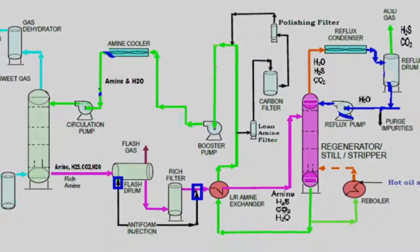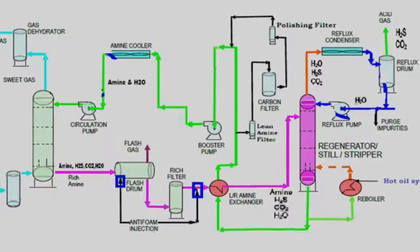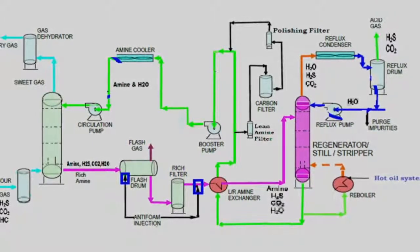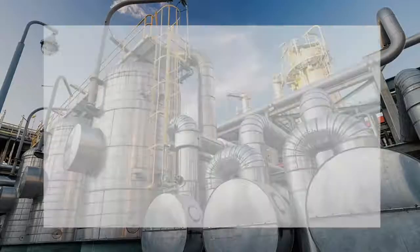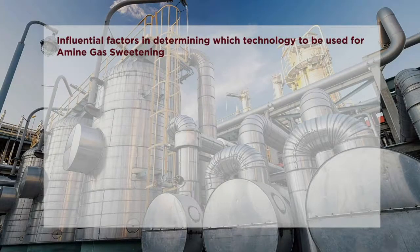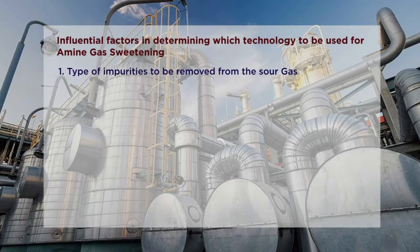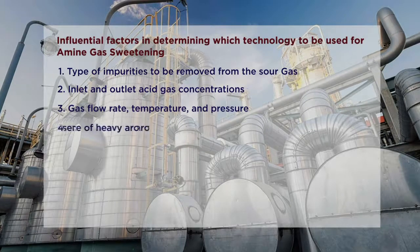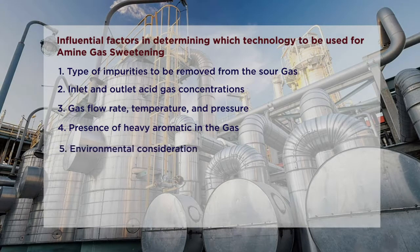Besides hydrogen sulfide and carbon dioxide, other sour gas contaminants such as carbon disulfide, ammonia, and other impurities demand additional separation steps. A sales gas specification usually requires four parts per million of hydrogen sulfide and two percent carbon dioxide. Influential factors in determining which technology to use for amine gas sweetening include: type of impurities, inlet and outlet acid gas concentrations, gas flow rate, temperature and pressure, presence of heavy aromatics, environmental considerations, and relative economics.